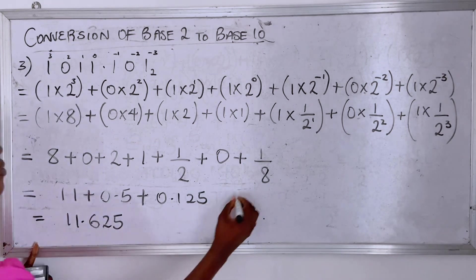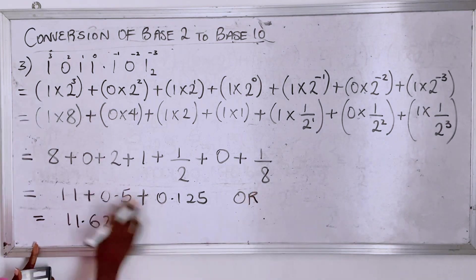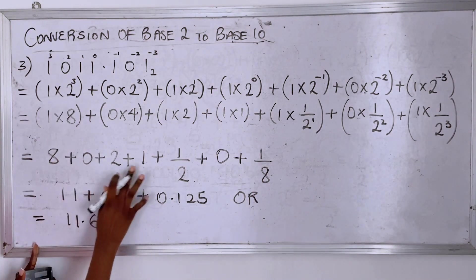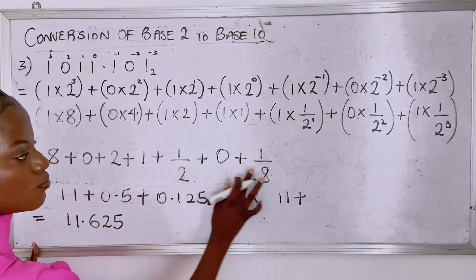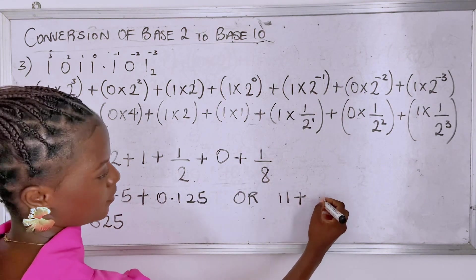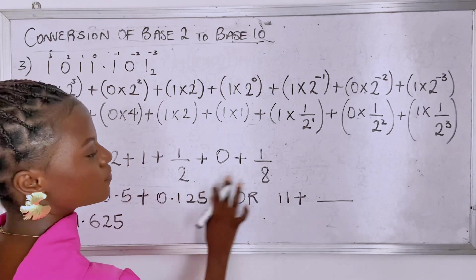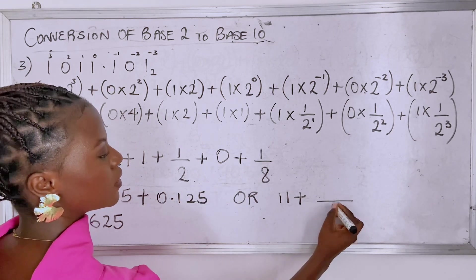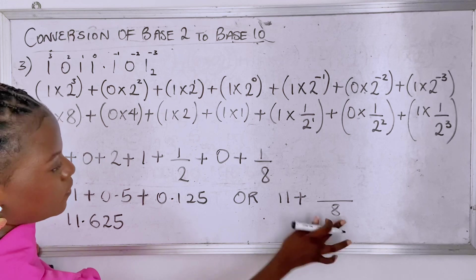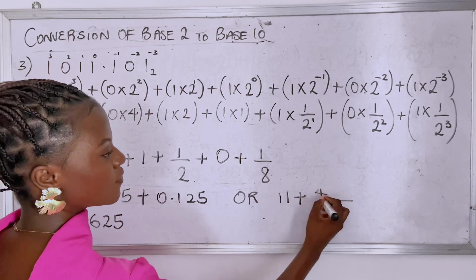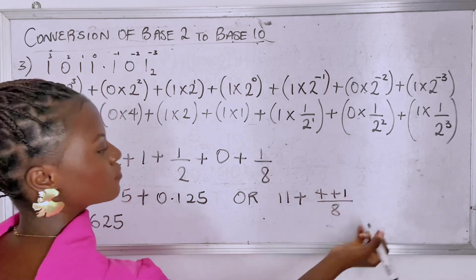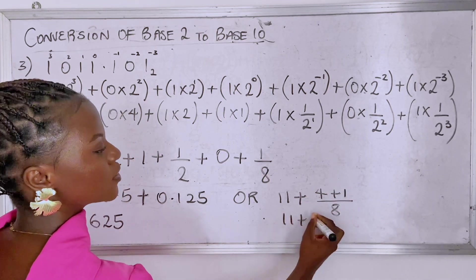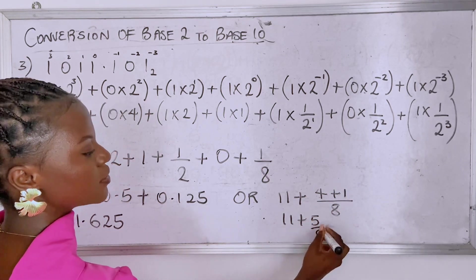In base ten, eight plus zero plus two plus one is eleven plus the LCM of two and eight is eight. So two in eight is four, four times one is four. Eight in eight is one, one times one is one.